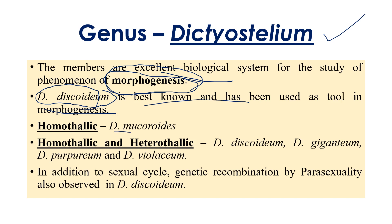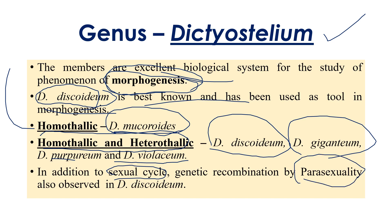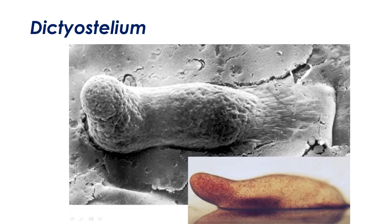There are both homothelic and heterothelic species in Dictyostelium. Dictyostelium mucoroides is the best example of a homothelic species. Species such as Dictyostelium discoideum, Dictyostelium giganteum, Dictyostelium purpureum, and Dictyostelium violaceum have properties of both homothelic and heterothelic. In addition to the sexual life cycle, Dictyostelium discoideum also benefits from the parasexuality phenomenon.